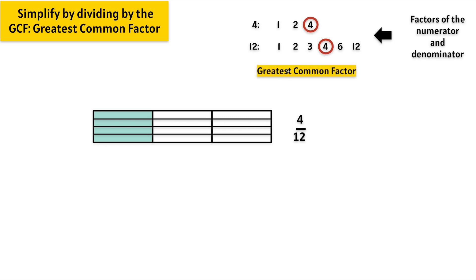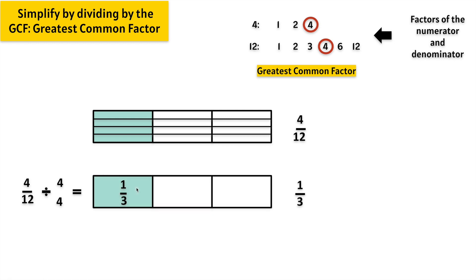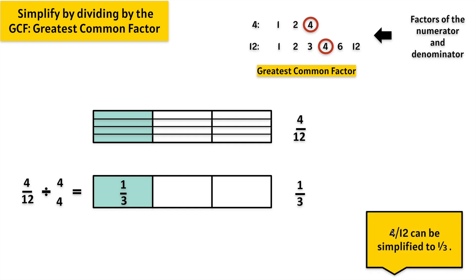4 is the greatest or largest common factor. We will take 4 twelfths and divide by 4, because 4 is the greatest common factor between 4 and 12. 4 divided by 4 is 1 and 12 divided by 4 is 3. Let's make a model of 1 third. We notice that 4 twelfths and 1 third are equivalent, and 1 third is the simplest form of 4 twelfths. 4 twelfths can be simplified to 1 third.